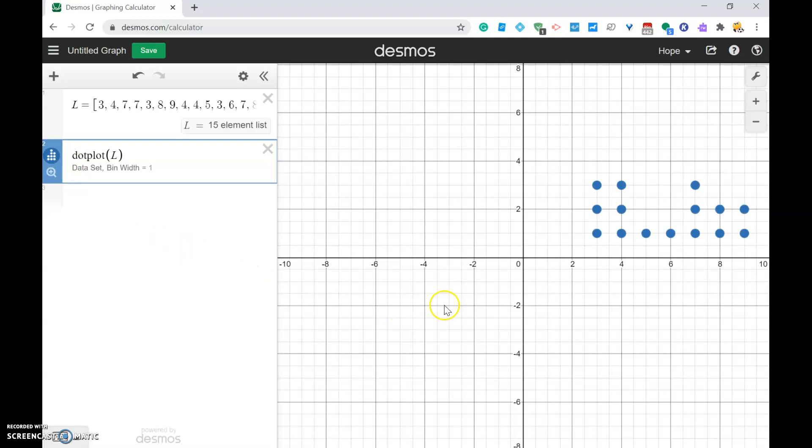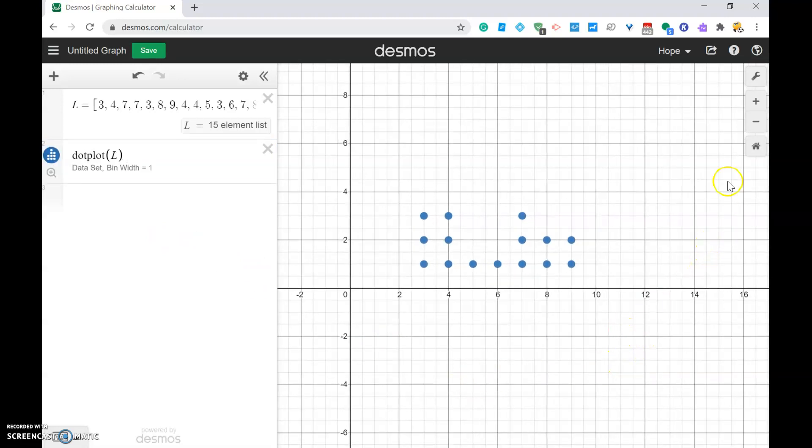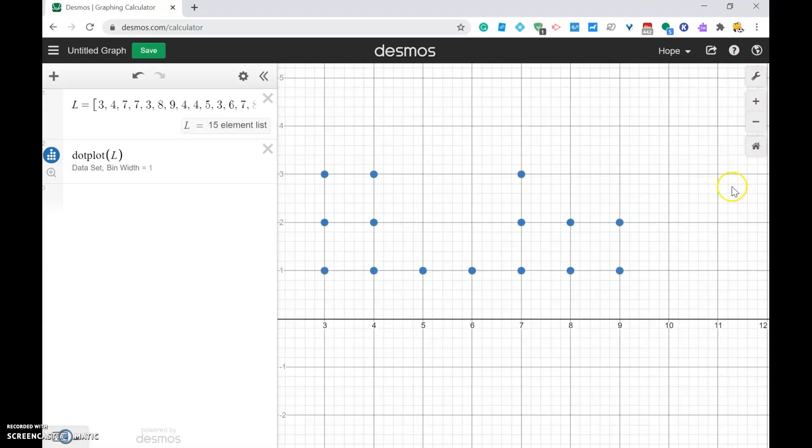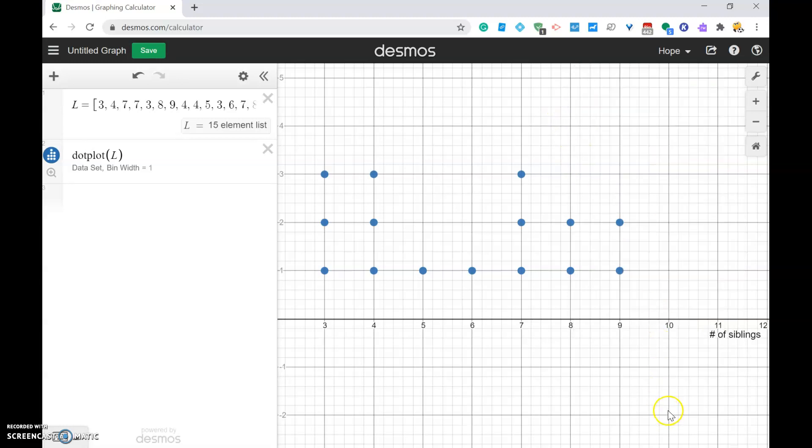Now you can see your dot plot over here. What you want to do now is zoom in if you'd like and click on this tool to add a label. Let's say this was number of siblings - you want to make sure that your graph is labeled, so we'll go with number of siblings.